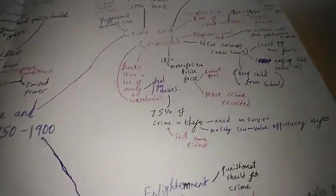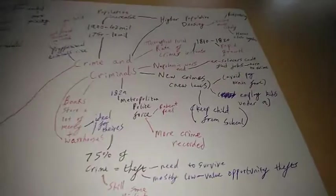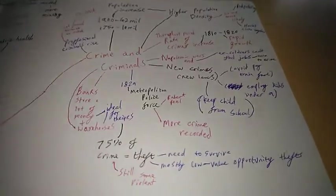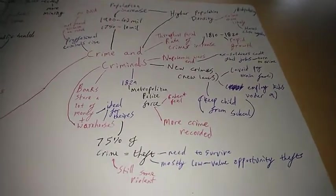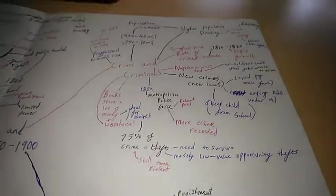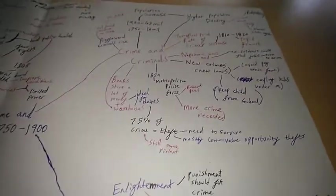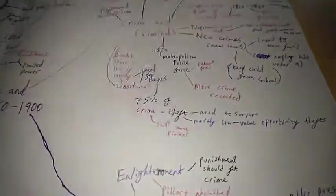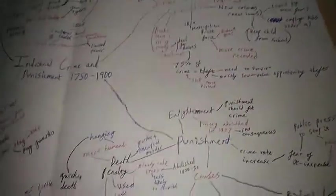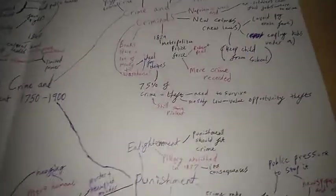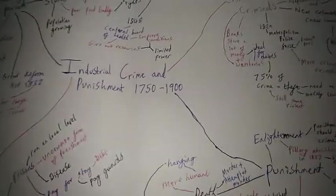As with many other times, 75% of crime was theft. There was still some violent crime but not that much. Theft because of needing to survive and it was mostly low value opportunity thefts. This was mostly the poor people striking back, getting some money because they didn't have enough. The peasant empire strikes back. Okay let's move on.